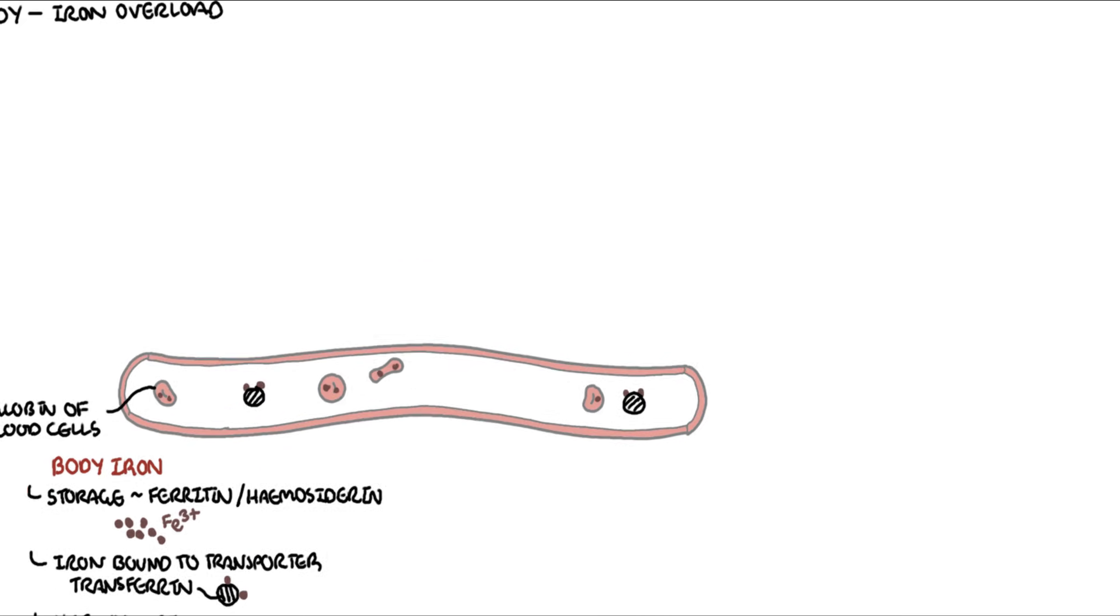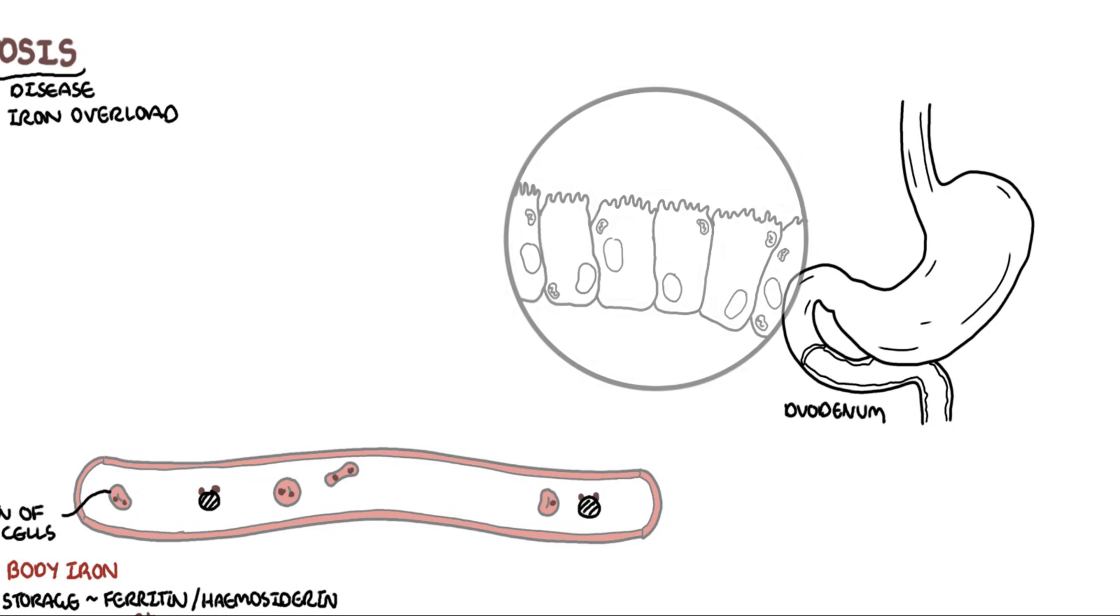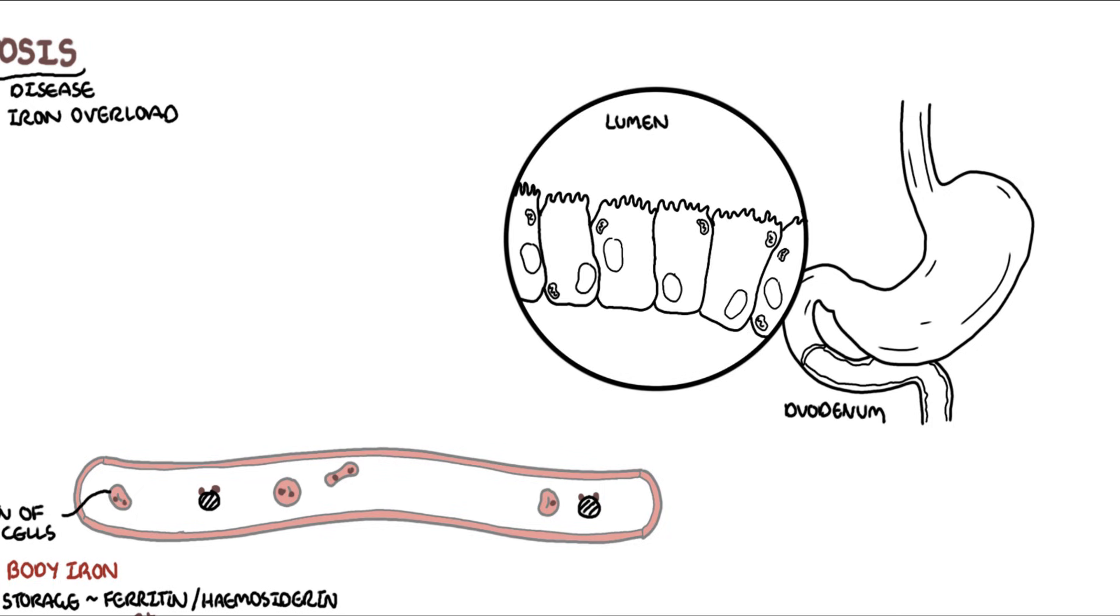We get iron from certain foods and vegetables. When we eat, it goes into our stomach and gets absorbed in the area of the small intestine called the duodenum. Here iron is absorbed via a transporter on the apical surface of the enterocytes called DMT1. From here, iron can either be stored as ferritin or absorbed into circulation via ferroportin, the orange transporter here, a very important transporter.